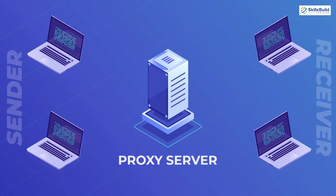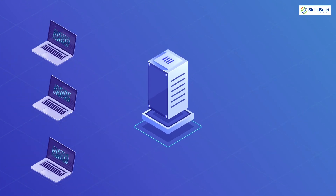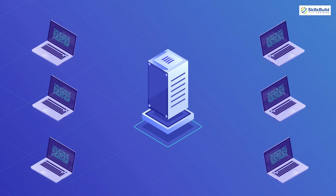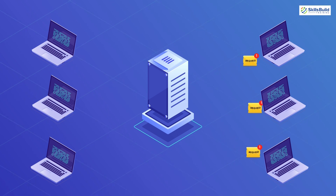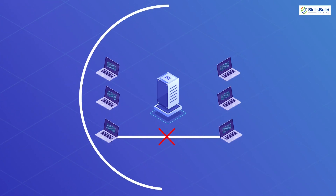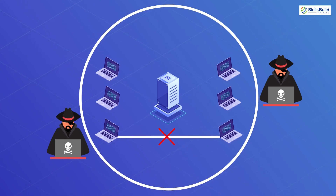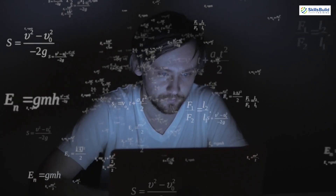A proxy server works by intercepting connections between sender and receiver. All incoming data enters through one port and is forwarded to the rest of the network via another port. By blocking direct access between two networks, proxy servers make it much more difficult for hackers to get internal addresses and details of a private network.